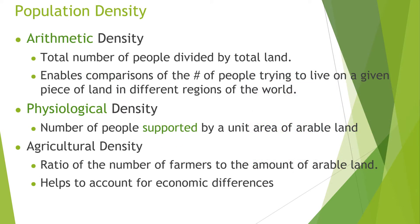It's really important that you know the three different types of density. The first type, arithmetic density, is the total number of people divided by total land area — that's your basic population density. The second is physiological density, which is the number of people supported by a unit area of arable land — total people divided by just arable or farmland.